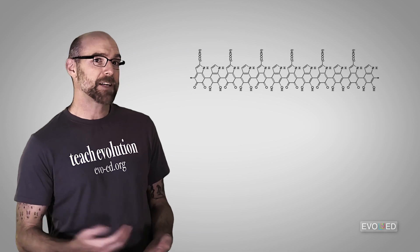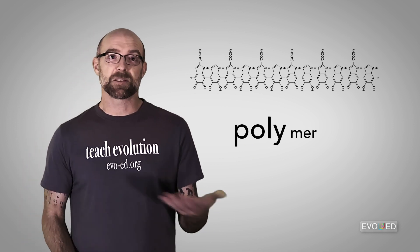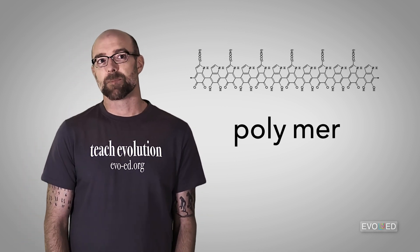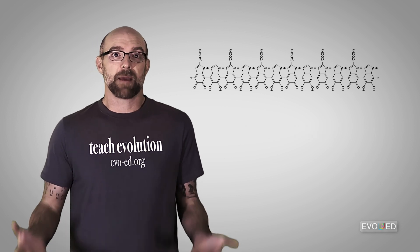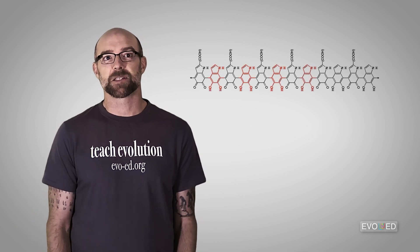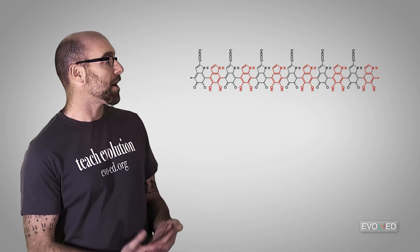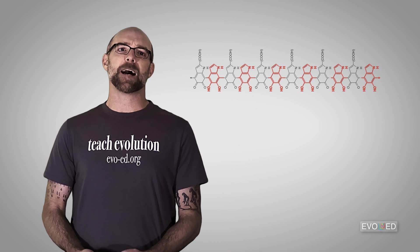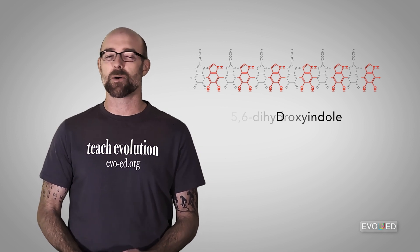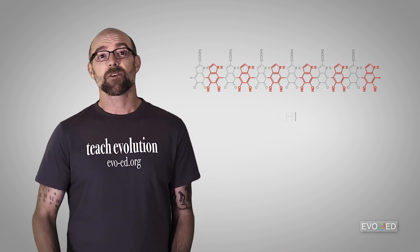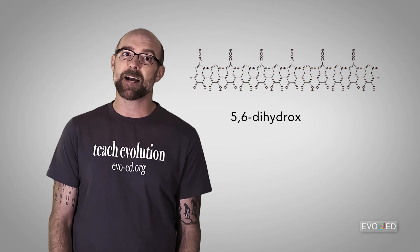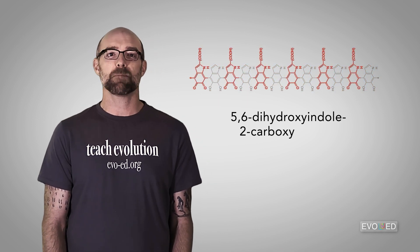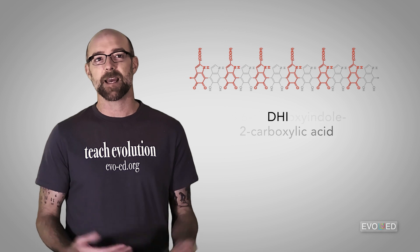Eumelanin is a molecule, and on a molecular level it looks like this. It's actually a polymer — poly means many and mer means unit. If we look more closely we can start to make out some of the repeating units. As you can see, there are two key subunits involved: one is called 5,6-dihydroxyindole or DHI, and the other is called 5,6-dihydroxyindole-2-carboxylic acid or DHICA.